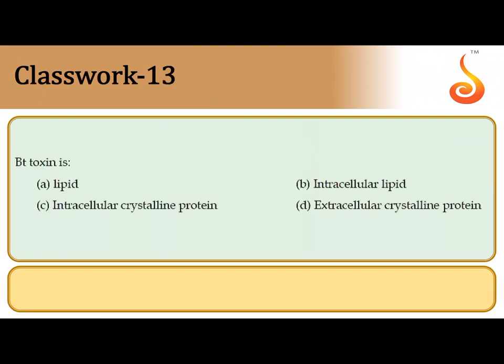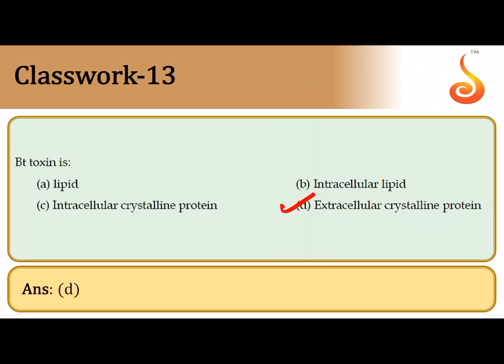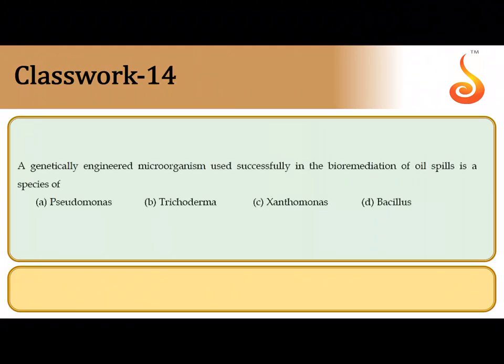The thirteenth question: BT toxin — is it an extracellular protein or an intracellular crystal protein? It is an intracellular crystal protein. It is released by the bacterial cell in a protoxin form, which does not destroy the bacteria itself because it needs to be activated into a toxin within the gut of the insect under suitable conditions.